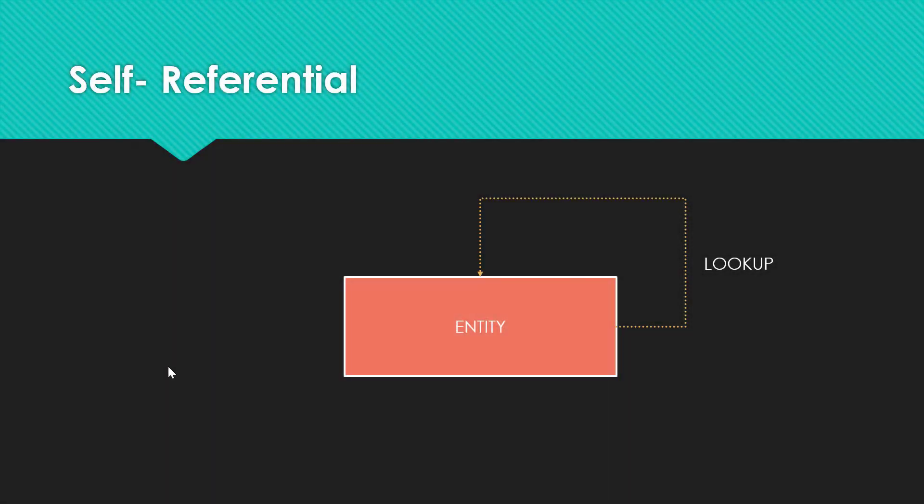If you want to create a relationship between the same entities, then it's a hierarchical relationship, or in other words, it's called a self-referential relationship. For example, in the account entity, we have an option to select a parent account, which looks up to the same account entity. This is called a hierarchical entity relationship.